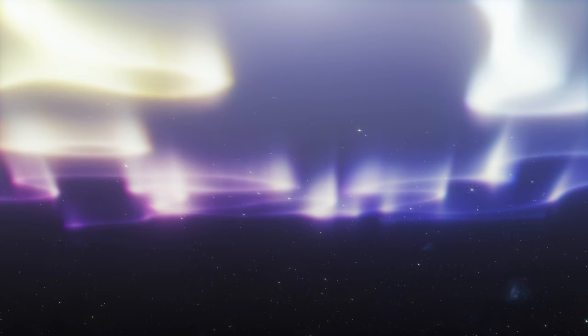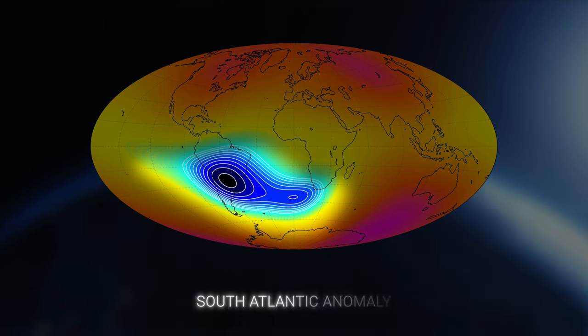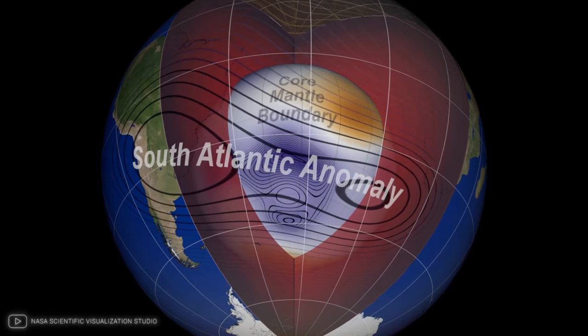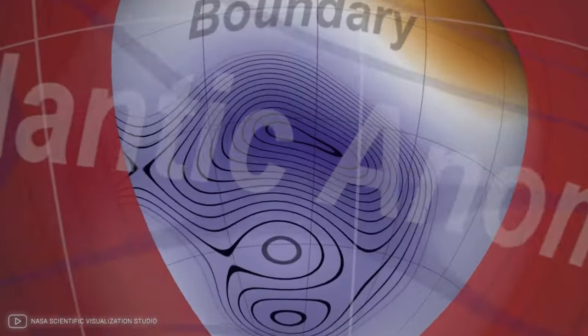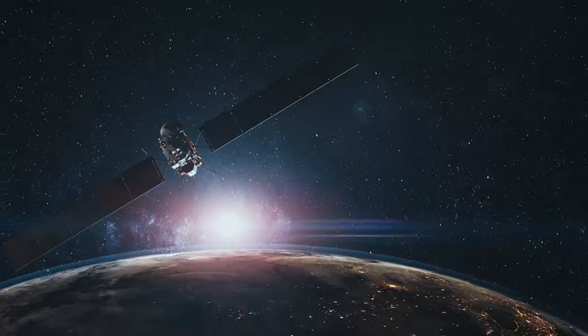This movement, although not a definitive sign of an imminent reversal, is a clear indication of the dynamic nature of the magnetic field. Other indications include the development of the South Atlantic Anomaly, an area where Earth's magnetic field is much weaker. This anomaly grew and deepened over time, affecting satellites and spacecraft.